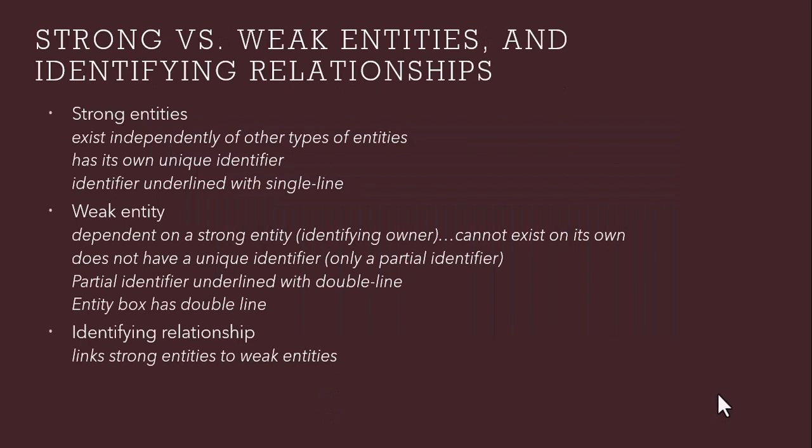There are two types of entities — either an entity can be strong or weak. A strong entity exists independently of other types of entities and has its own unique identifier. A weak entity depends on the strong entity and cannot exist on its own — it must depend on the strong entity.